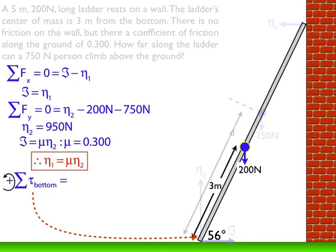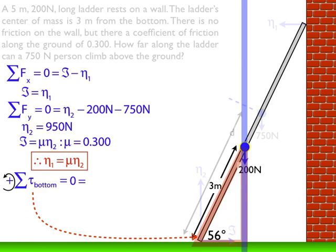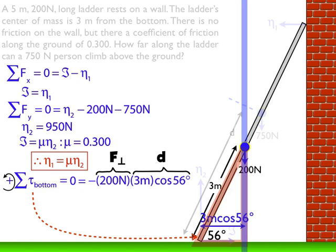When summing up the torques, the ladder isn't going to rotate, so I'll set that equal to zero — that's the second condition of equilibrium. I draw a line along the direction of the force. Torque is defined by the moment arm between the fulcrum at the bottom of the ladder to the direction of the force. I can see this as a triangle: the hypotenuse along the ladder, the force as one side, and the perpendicular moment arm is 3 meters cosine 56°. So the torque is 200 Newtons times 3 meters cosine 56°.